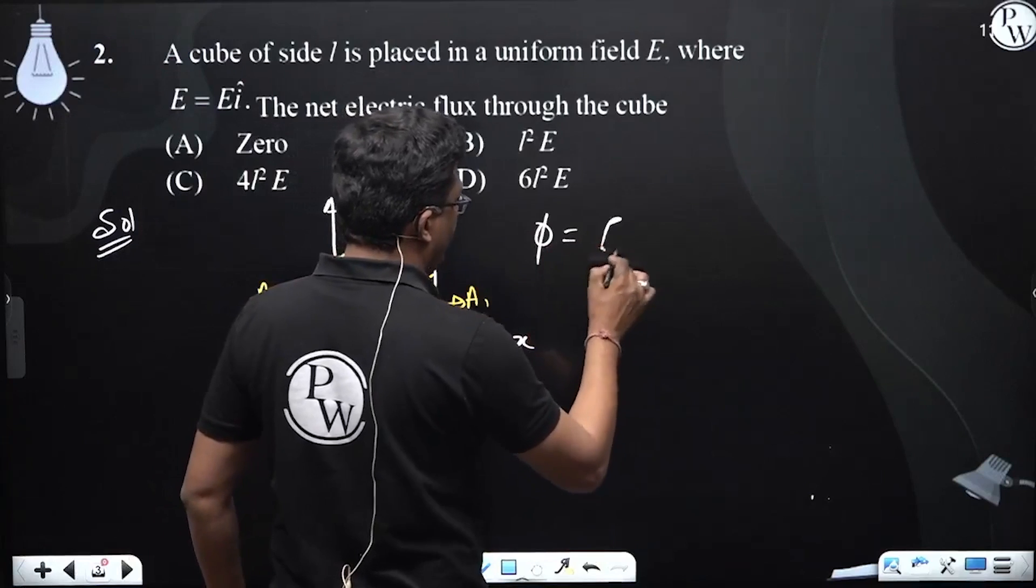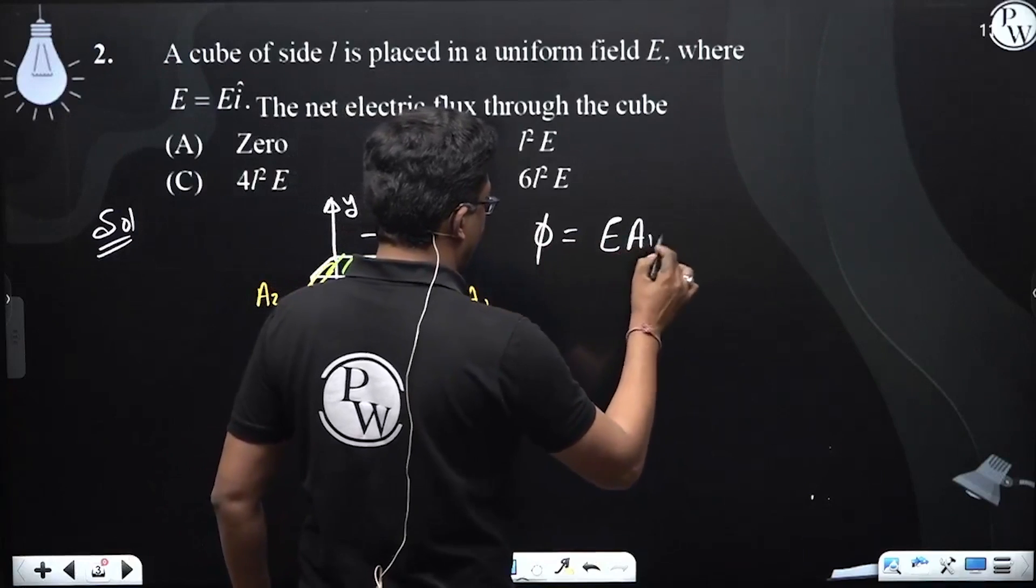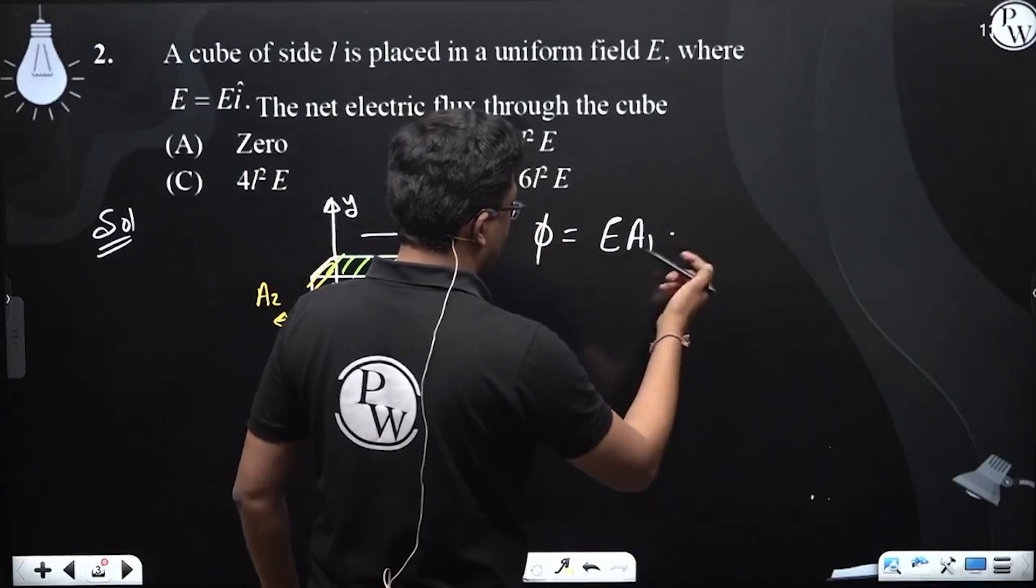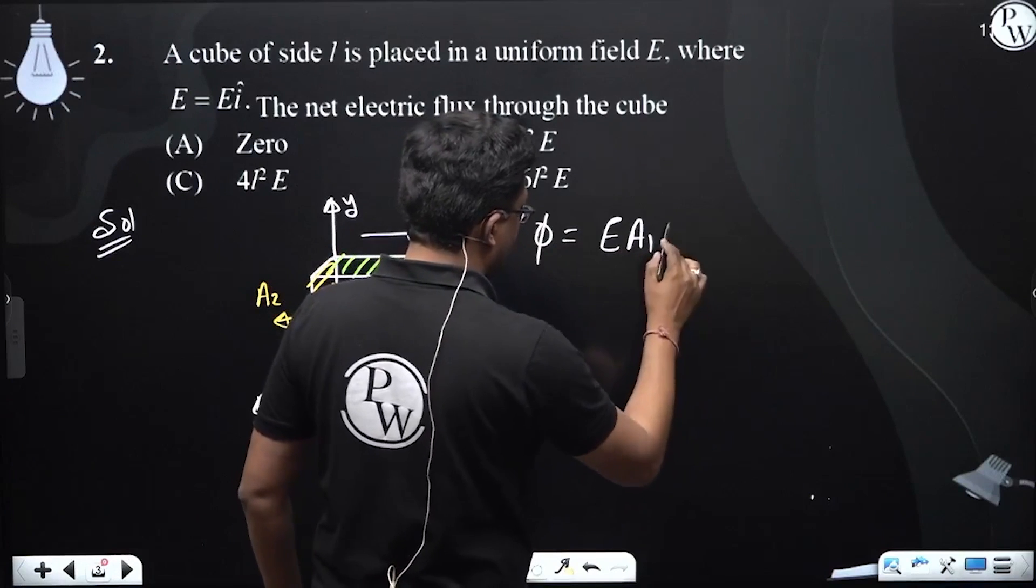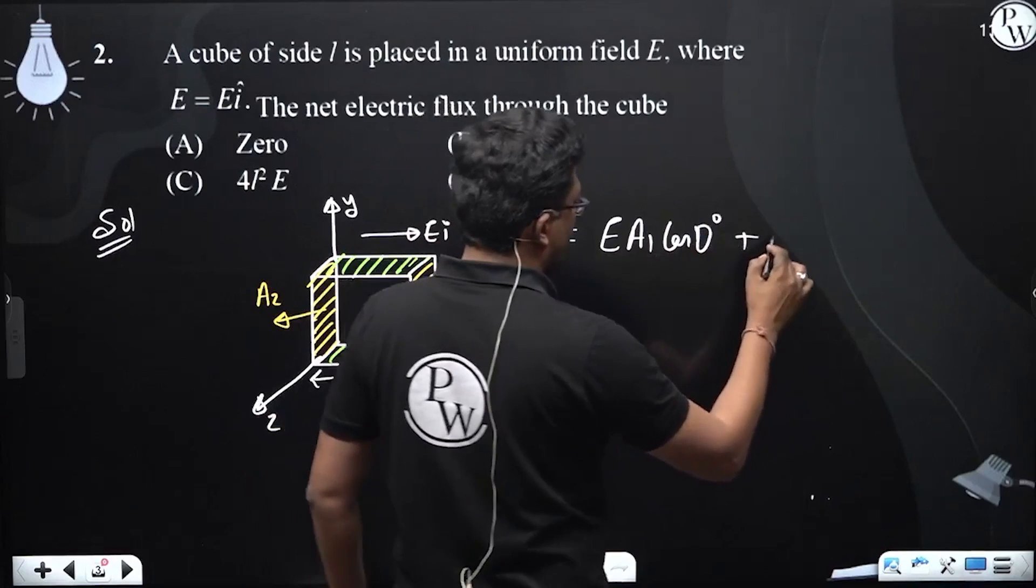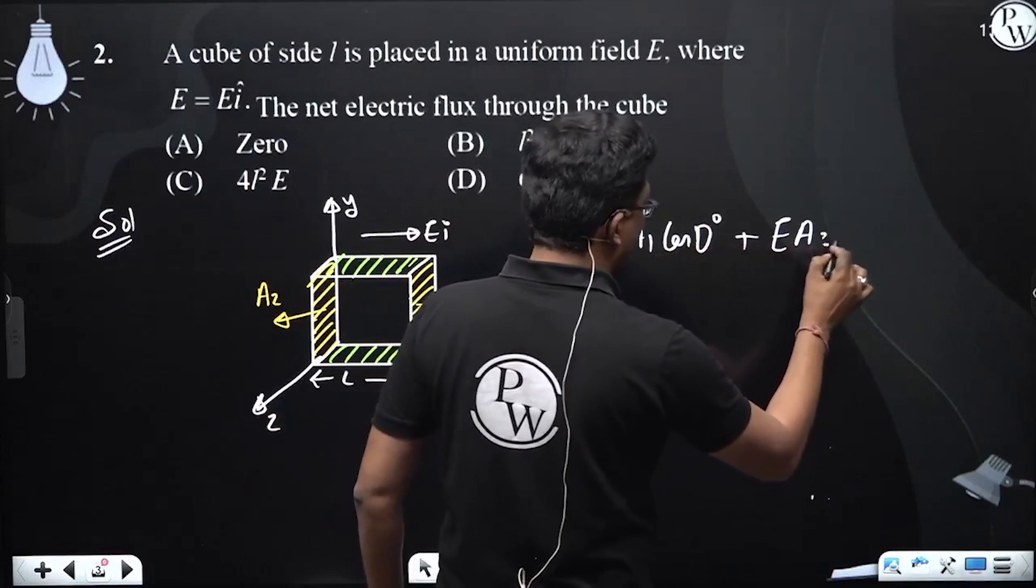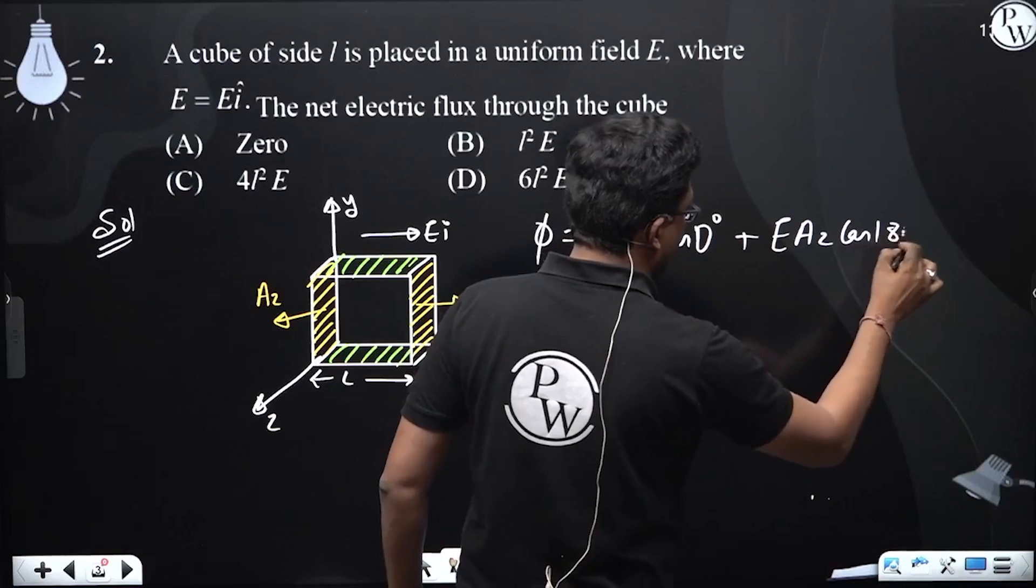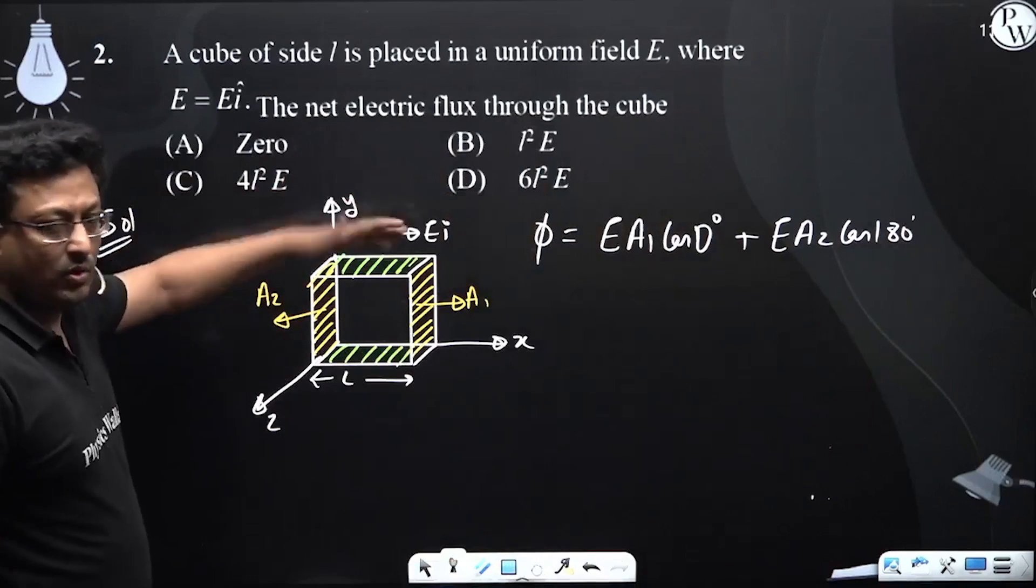Flux will only be contributed by E A1 cos 0 degrees plus E A2 cos 180 degrees. So the result is zero.